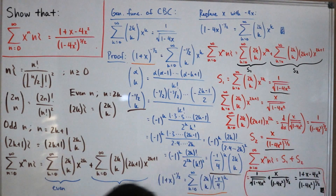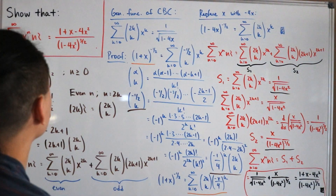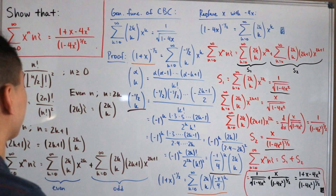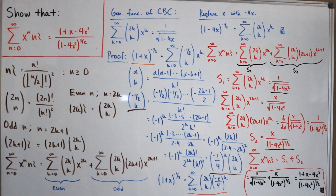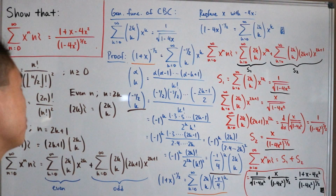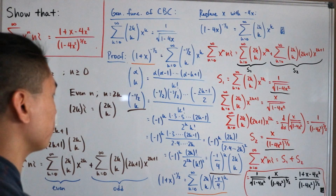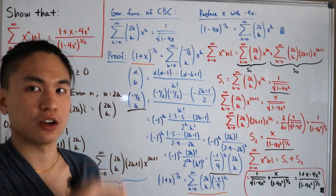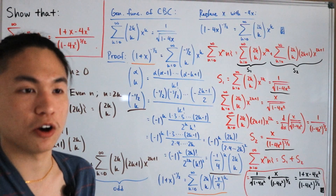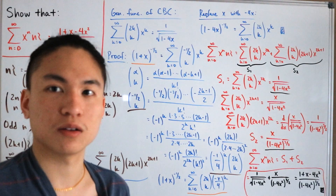That's it — a cool result. Looking back at this, I'm thinking I should find more generating functions to prove. I really had fun with Fibonacci numbers, and the swinging factorial is another great one, especially now having proved the central binomial coefficient generating function along the way. There are plenty more out there.